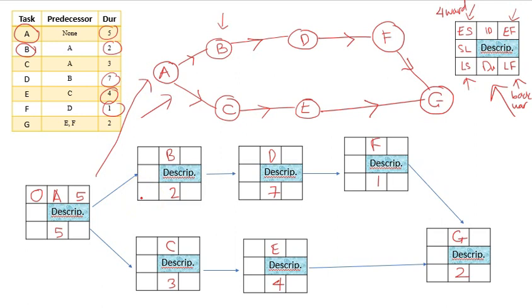Next is to determine what is the ES for B and C. How to do that is we just simply carry the early finish of A to the next activity. So this becomes the early start for B and C, so this is 5 and 5. We can automatically calculate the EF, which is 5 plus 2 is 7, and this is 5 plus 3 is 8.